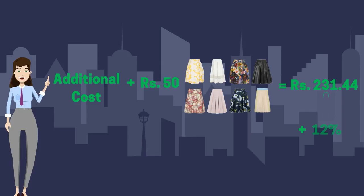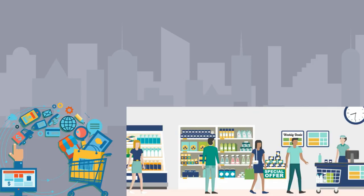Assuming the last stage of selling is through an e-commerce portal or a retail store, an additional cost including margin of 30 rupees is added. The cost becomes 289 rupees and 20 paise, plus 12% tax. So the final price paid by the customer will be 323 rupees and 90 paise.